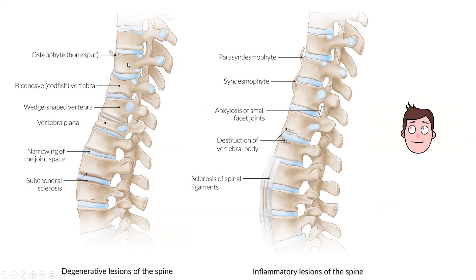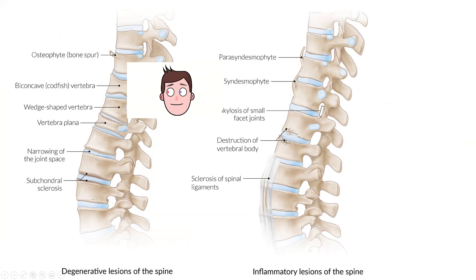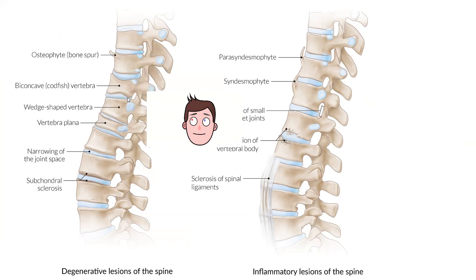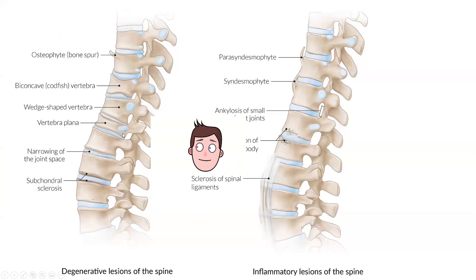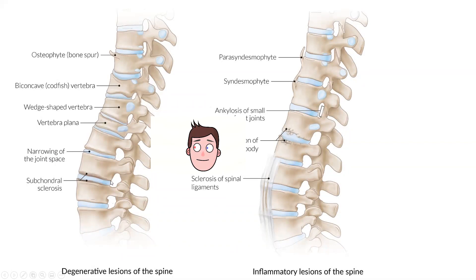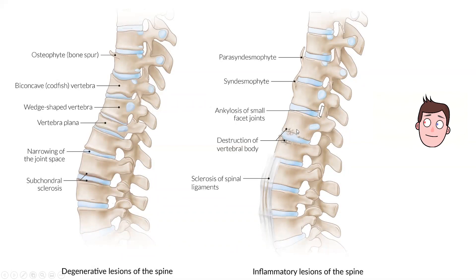Let's talk about degenerative changes in the spine — there's degeneration and there's inflammation, and those are different. Osteophytes are bony prominences sticking out due to bone irritation. Vertebral bodies can become concave or wedged, such as vertebral plana. There's also narrowing of joint spaces, sclerosis, damage to intervertebral discs, and sclerosis of the anterior and posterior spinal ligaments, which further limits movement.